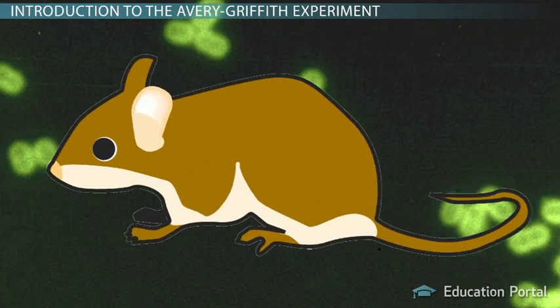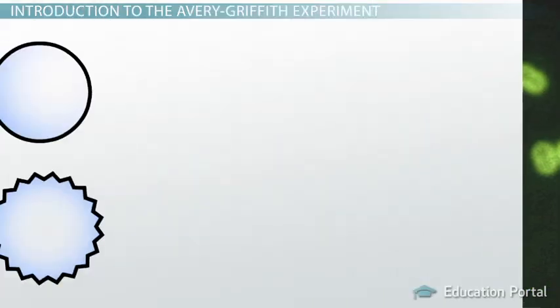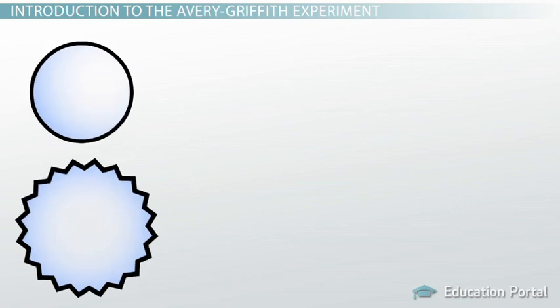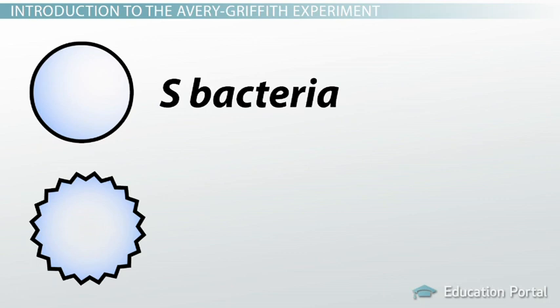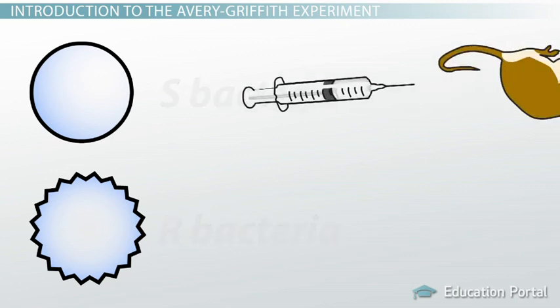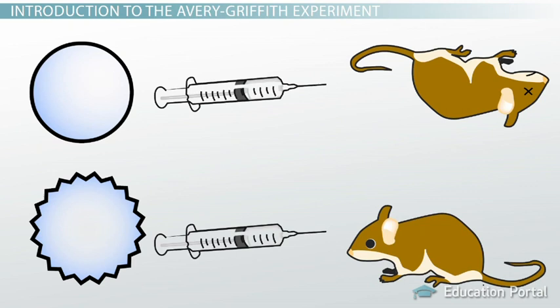When pneumococcus bacteria are injected into mice, the mice can become infected with pneumonia and die. Griffith worked with two strains of pneumococcus — one which had a protective sugar coat and one that didn't. The one with the sugar coat was called the S-bacteria because it looked smooth under the microscope. The one without the coat was called the R-bacteria because the lack of coating made it look rough. Mice always died when injected with the S-bacteria, but mice injected with the R-bacteria didn't die.